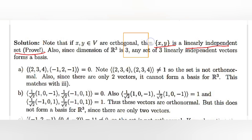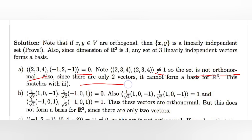Set A: the inner product of (2,3,4) and (-1,2,-1) equals 0, so the set is orthogonal. However, the inner product of (2,3,4) with itself is not equal to 1, so the set is not orthonormal. Also, since there are only two vectors, it cannot form a basis of R3. This matches with option 3.